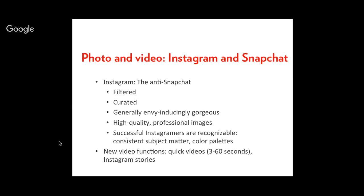Instagram is in heavy competition with Snapchat, so they're introducing a lot of Snapchat-like functions — there's more video content and you can post short videos between three and sixty seconds. They've also created a feature called Instagram Stories, where you make stories very similar to Snapchat. It gets a little complicated because of the competition between the two companies, but for most theaters the main Instagram features — photos plus short videos — will be the most relevant in their daily work.